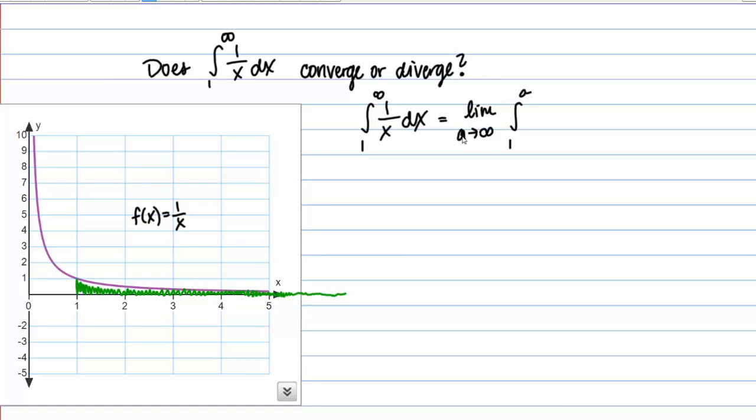And then I'm going to take the limit as a goes to infinity of that integral. So I'm going to have the limit as a goes to infinity of the integral from 1 to a of 1 over x dx. So then my next step is just to evaluate this definite integral here. So this is a pretty easy one to work with. So I get the limit as a goes to infinity. We want to make sure to always carry this limit through our work. So if I take the anti-derivative of 1 over x, I get the natural log of the absolute value of x. And I'm going to evaluate this from 1 to a.